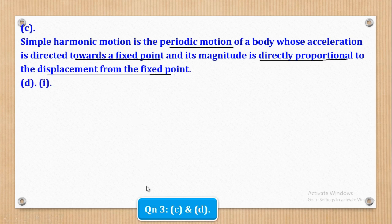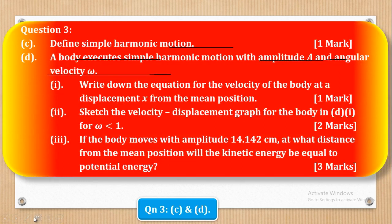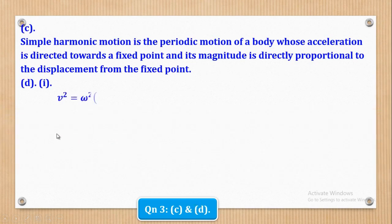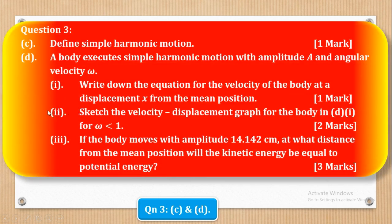Now let's go to Part D. Part D says: a body executes simple harmonic motion with amplitude A and angular velocity omega. Roman 1: write down the equation for the velocity of the body at a displacement x from the mean position, for one mark. The relationship is: v² = ω²(A² − x²), where A denotes amplitude and x denotes displacement from the mean position.